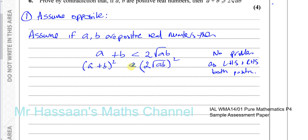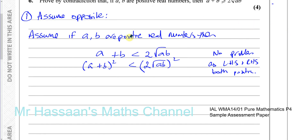The problem with squaring both sides arises when one side is negative. For example, minus three is less than two, but squaring both sides gives nine and four, which is no longer true. However, because A and B are both positive, A plus B squared is positive, and two times the square root of AB must also be positive.